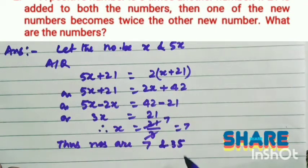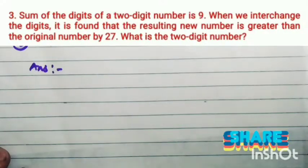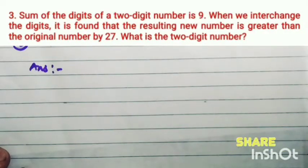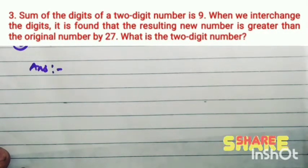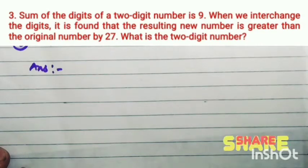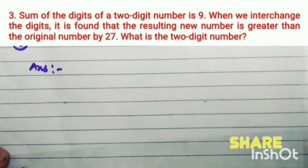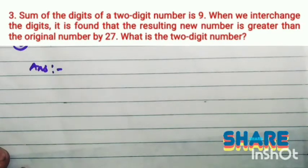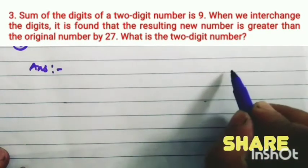That is the answer. Exercise 2.4, question number 3. Sum of the digits of a two-digit number is 9. When we interchange the digits, it is found that the resulting new number is greater than the original number by 27. What is the two-digit number?